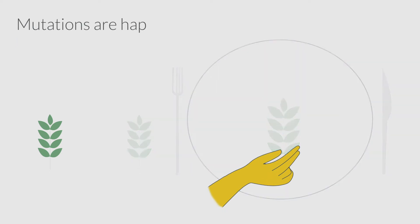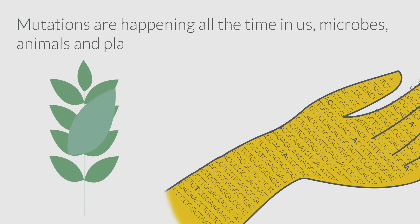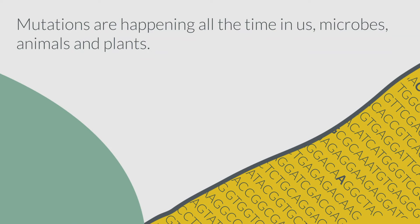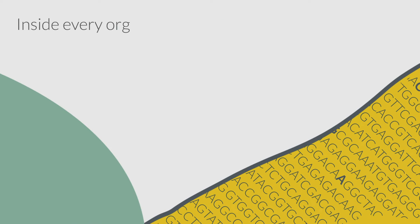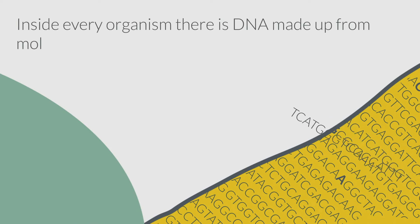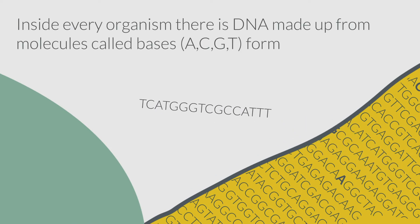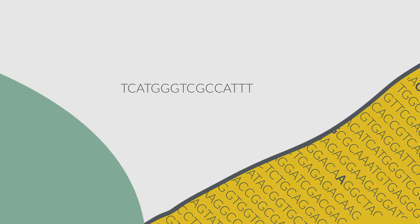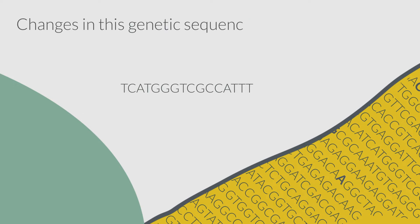Mutations are happening all the time in us, microbes, animals and plants. Inside every organism there is DNA made up from molecules called bases A, C, G, T, forming a genetic sequence. Changes in this genetic sequence are mutations.